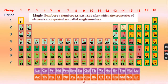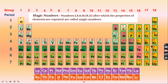For group 18: helium — add 8 to get neon (atomic number 10), add 8 to get argon (18), add 18 to get krypton (36), add 18 to get xenon (54), add 32 to get radon (86), then add 32 to get atomic number 118.